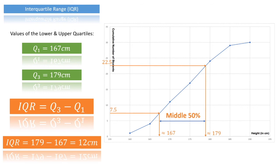That sums up how we can use cumulative frequency diagrams to find the median, the lower and upper quartiles, and the interquartile range. I hope that helps.